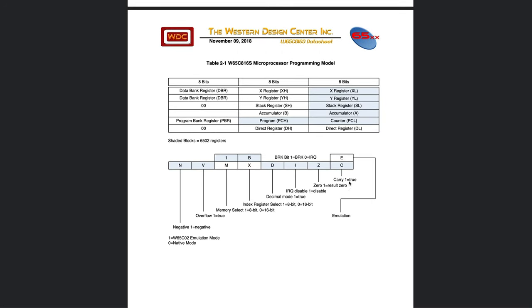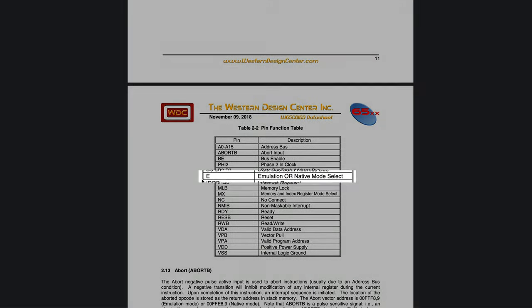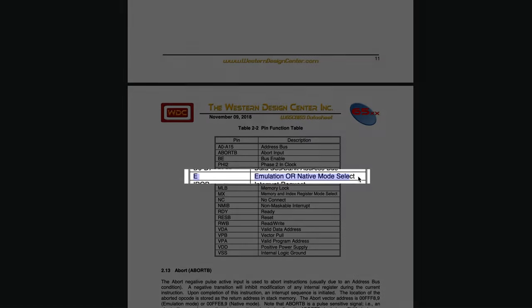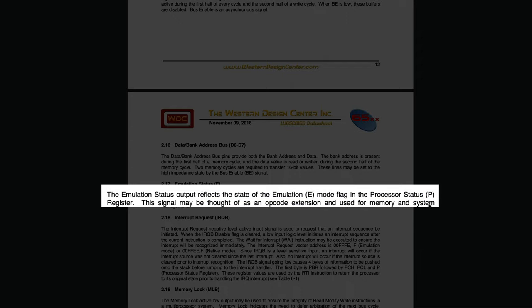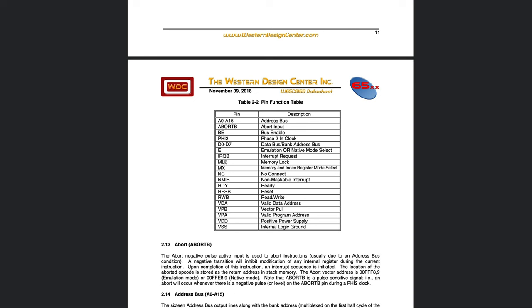You can see that the emulation select and break flags are accessible only through the processor status register. The emulation mode select flag is selected by the exchange carry and emulation bits instruction. The carry bit and the emulation bit are linked and you can only access the carry bit through the XCE instruction. On top of that the CPU has a pin that reports whether emulation or native mode is active. So let's see if we can add an LED to the emulation pin.